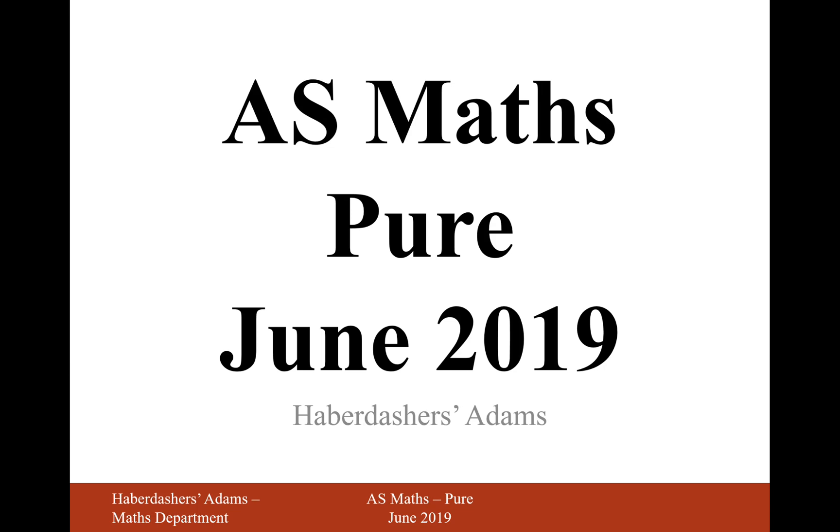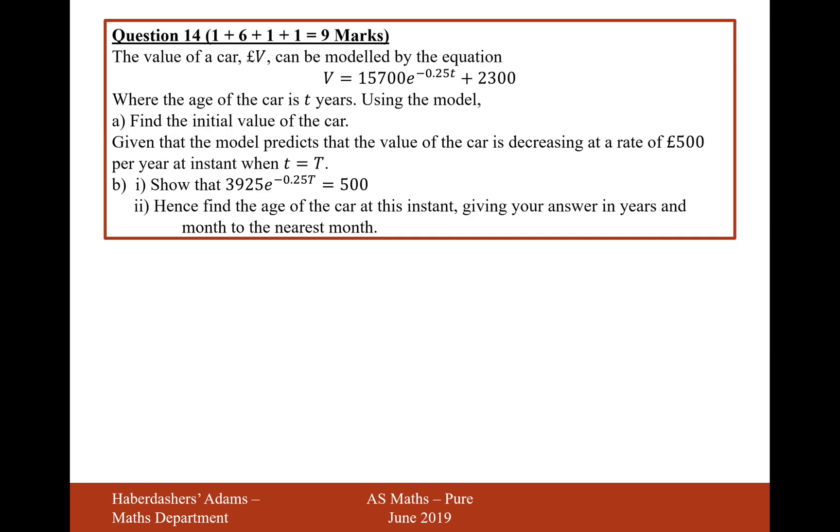Hello there and welcome to the June 2019 paper. Here we're looking at question 14. The value of a car, V, can be modeled by the equation V equals 15,700 e to the minus 0.25 t plus 2,300, where the age of the car is t years. Using the model, find the initial value of the car.